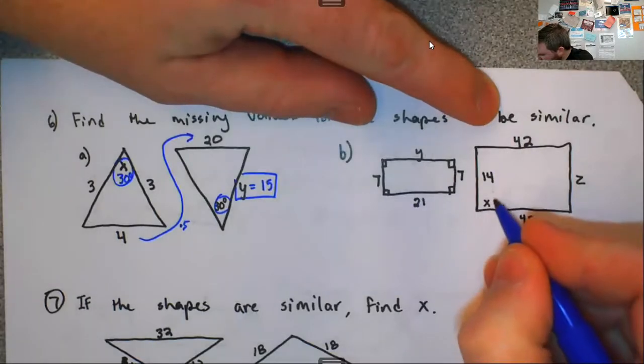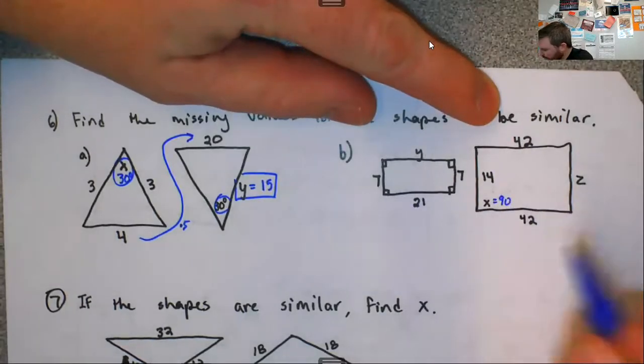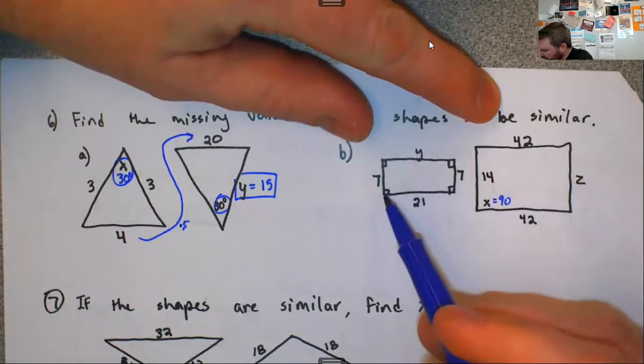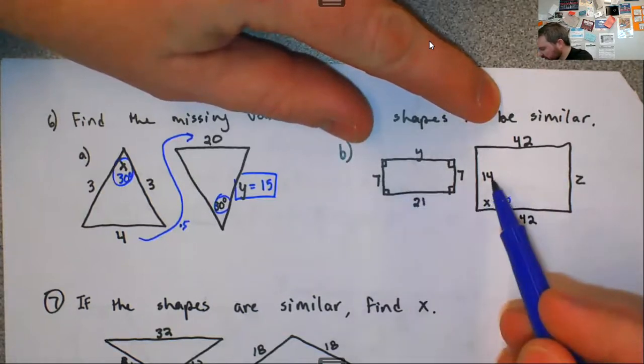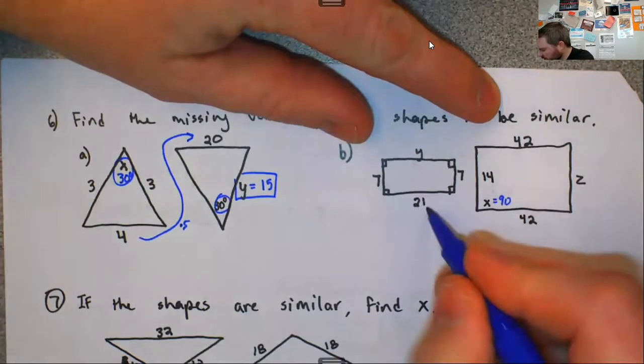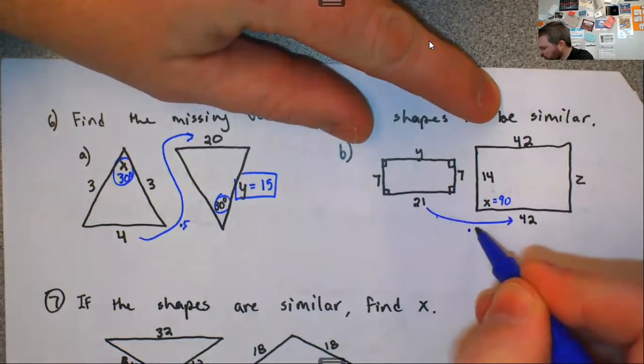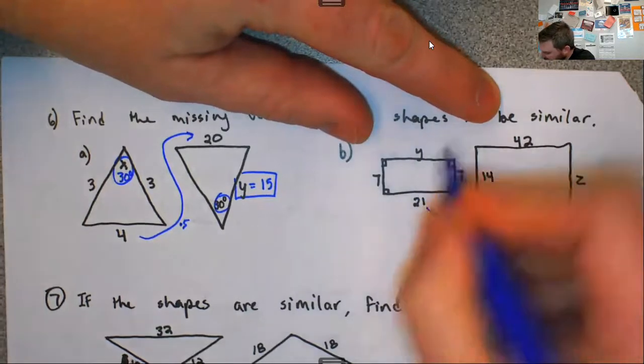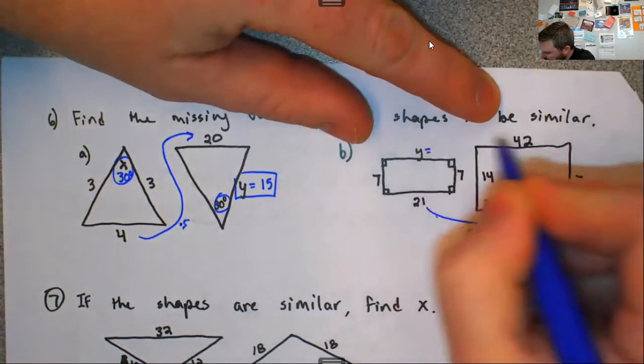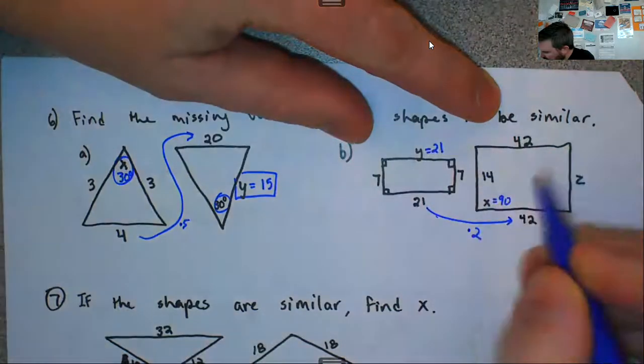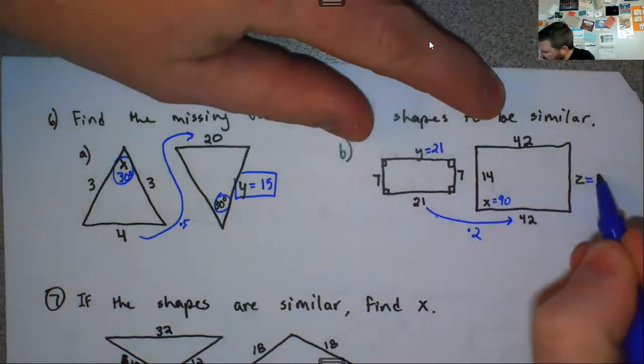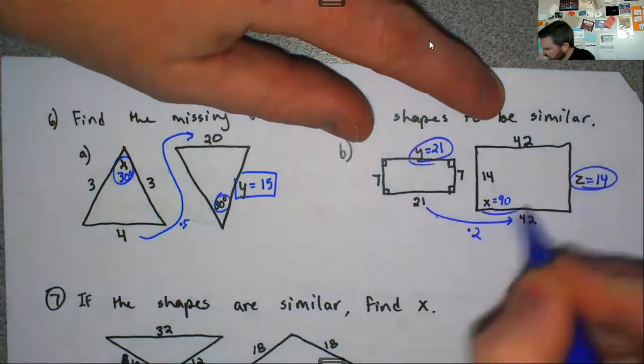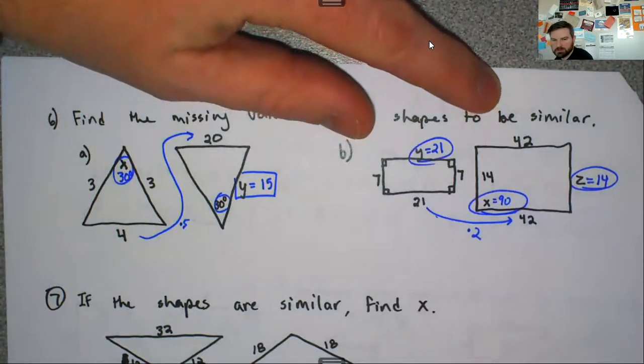It looks like we're going 7 to 14. So that's times 2. And 21 to 42, that's times 2. So going this direction, we multiply by 2. So going the other way, we divide by 2. So 42 divided by 2 is 21. And 7 times 2 is 14.